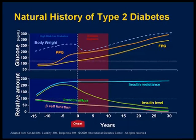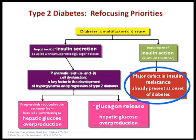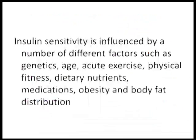This is the natural history, again showing what happens to the levels of beta cell function and insulin levels. The major defect in insulin resistance is already present at the onset of diabetes — not only at onset, but years and years before. Insulin sensitivity is influenced by a number of different factors such as genetics, age, acute exercise, physical fitness, dietary nutrients, medication, obesity, and body fat distribution. Look at the number of factors that can influence insulin resistance — there is something you can do about it. My debate here is not about what came first; that is not important. What we are discussing is what is dominant.